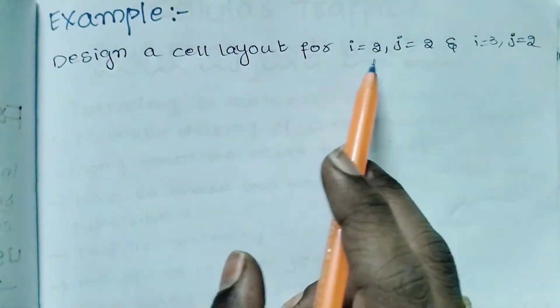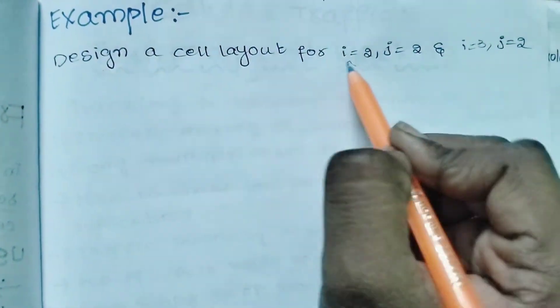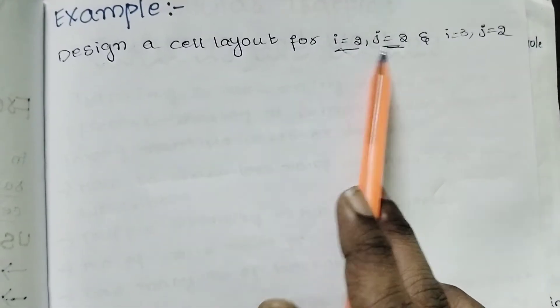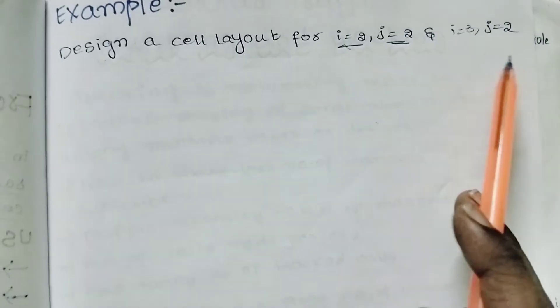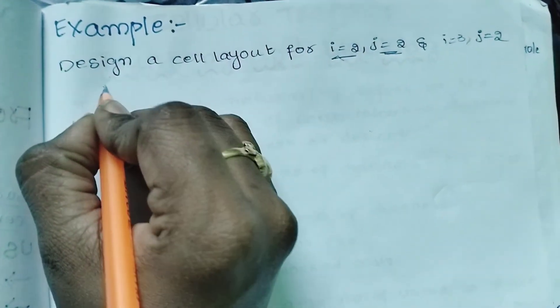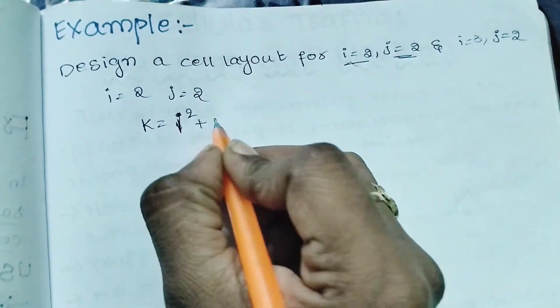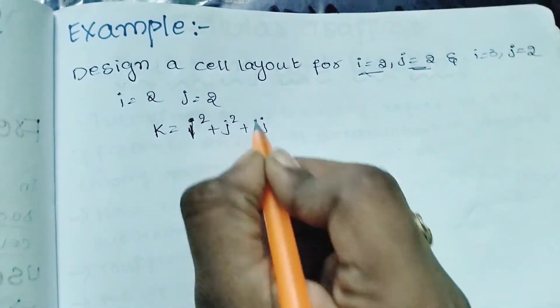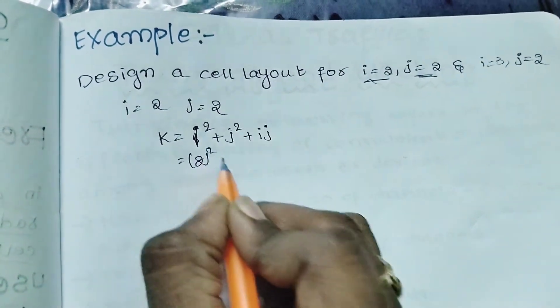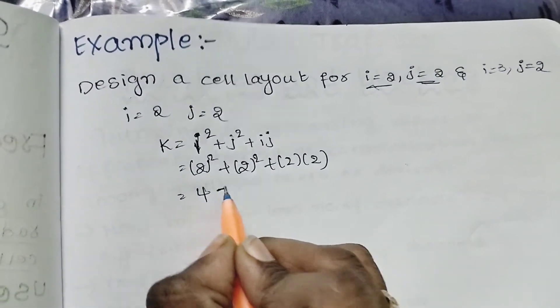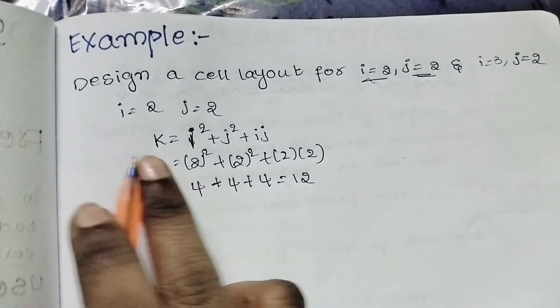Design a cell layout. Here we have the first problem: i equals 2, j equals 2. Using the formula k equals i² plus j² plus ij: k equals 2² plus 2² plus 2 into 2, which gives 4 plus 4 plus 4, that is k equals 12. So the cluster size is 12.